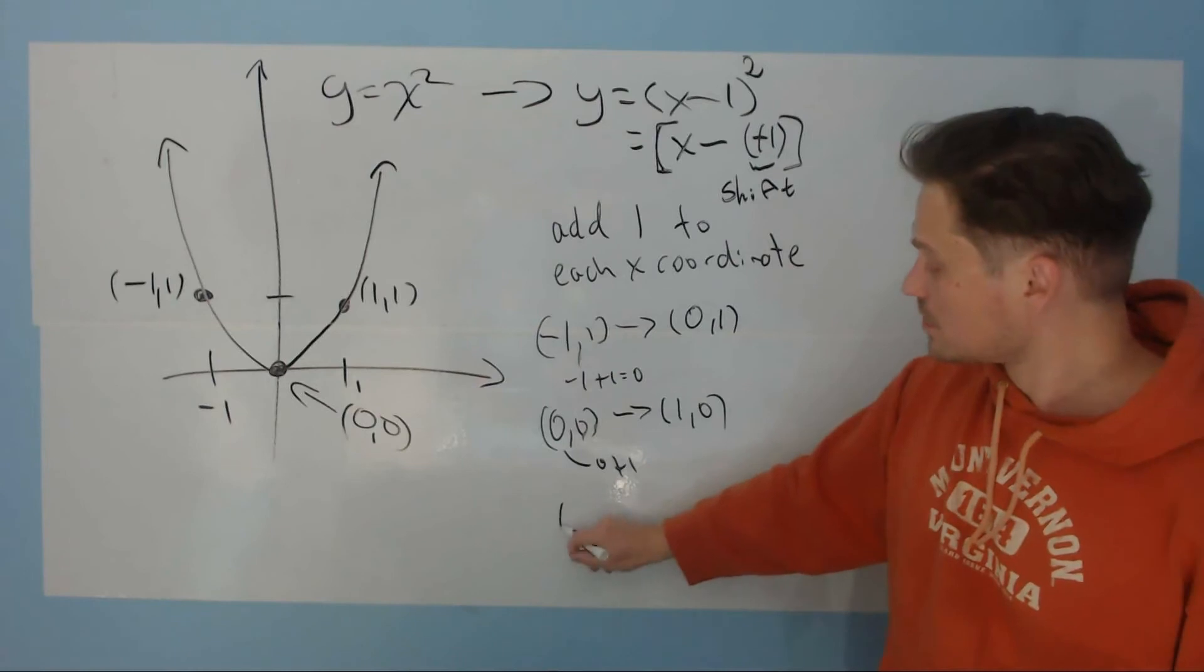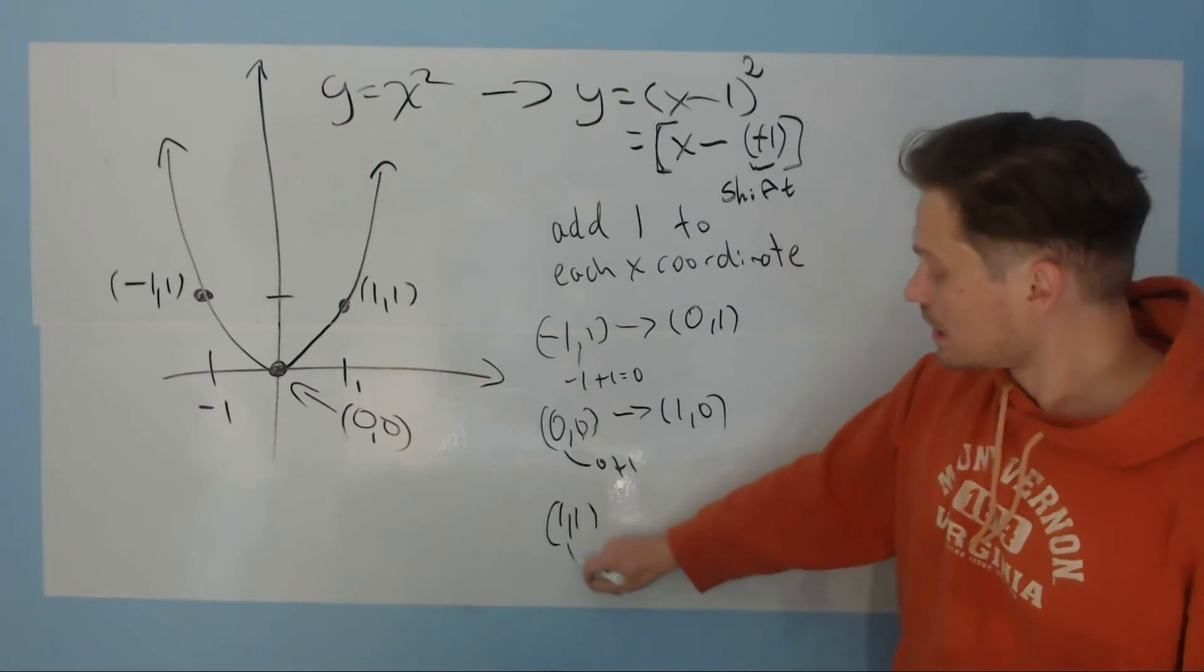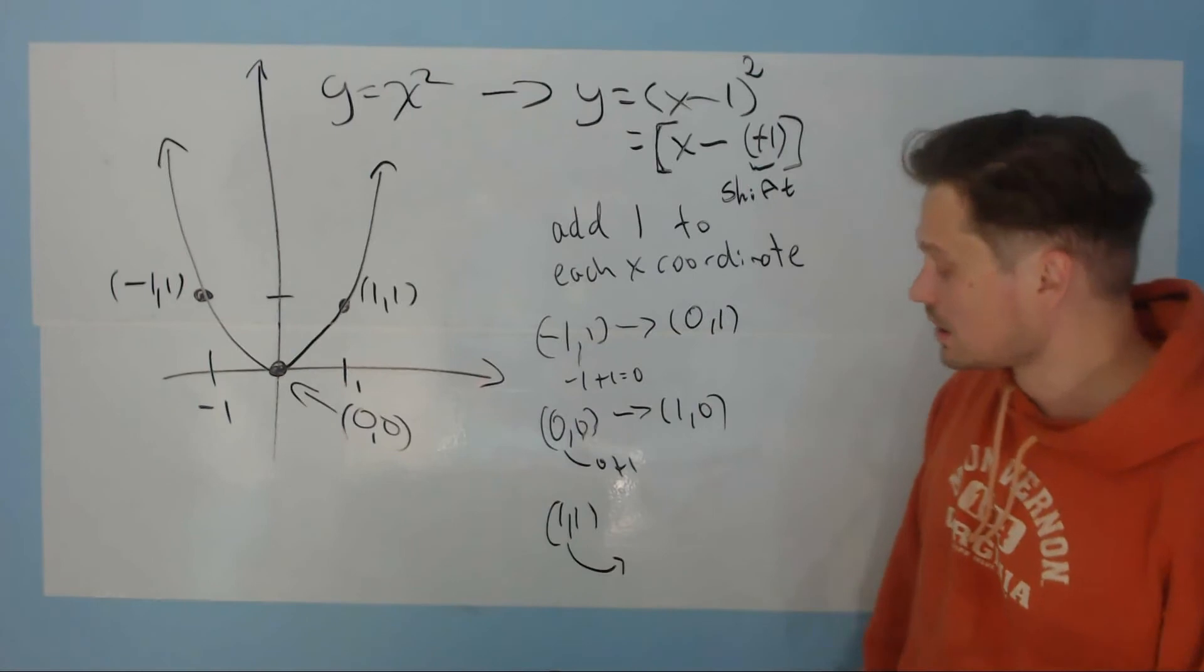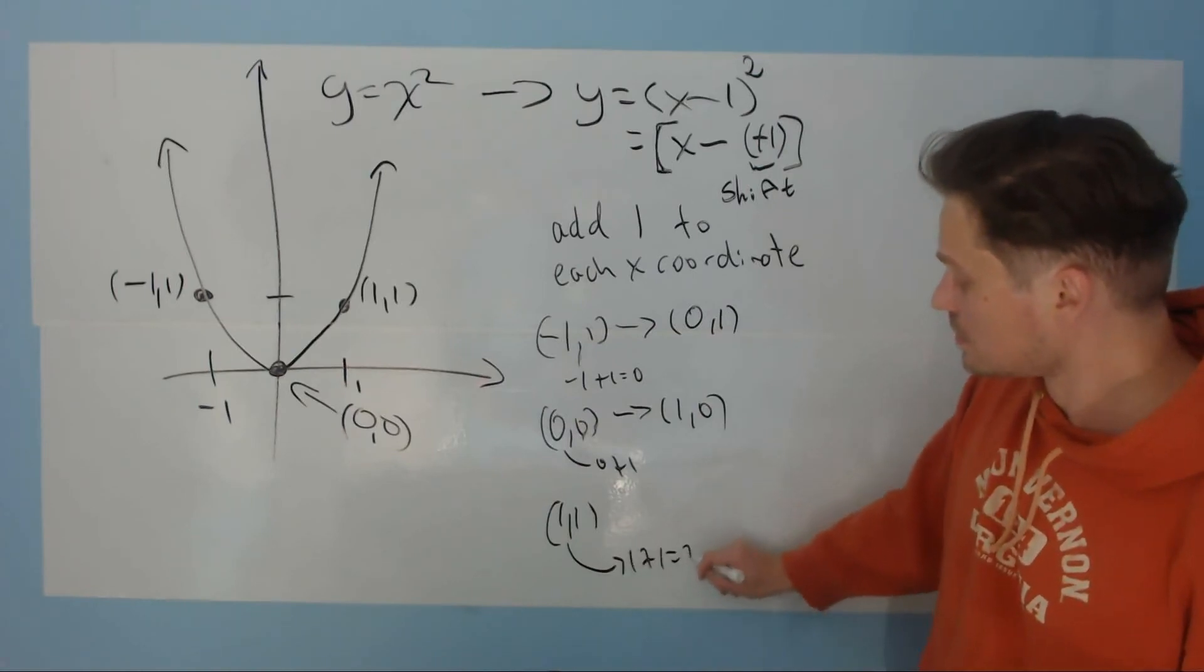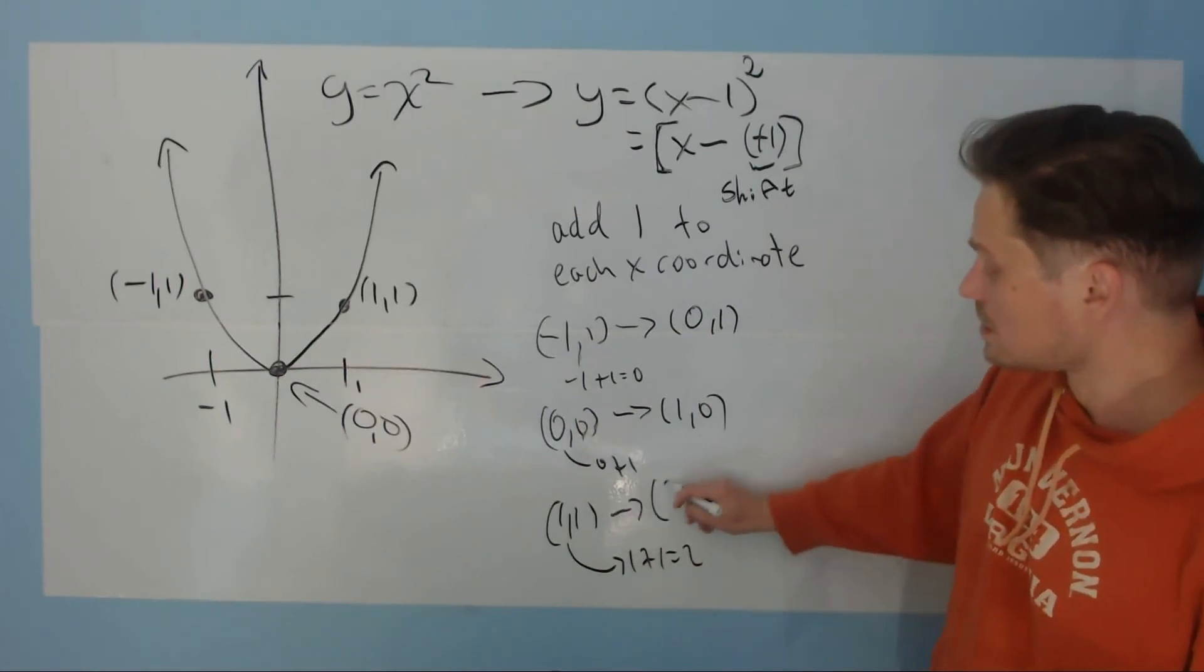Then you take the last point, which was 1, 1. And again, you're going to add 1 to only the x-coordinate. When you carry that out, you're going to have 1 plus 1, which of course is 2. So the new point is 2, 1.